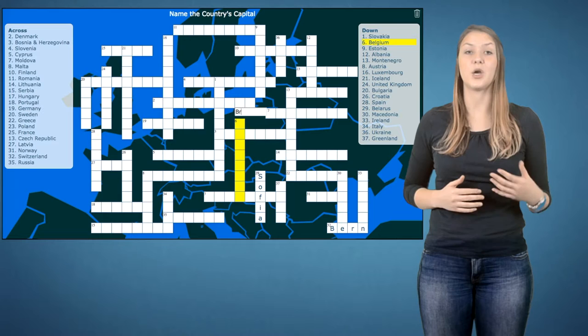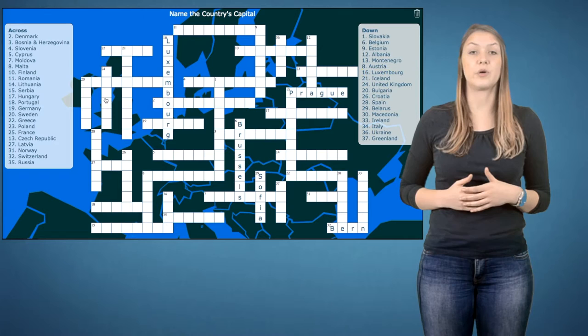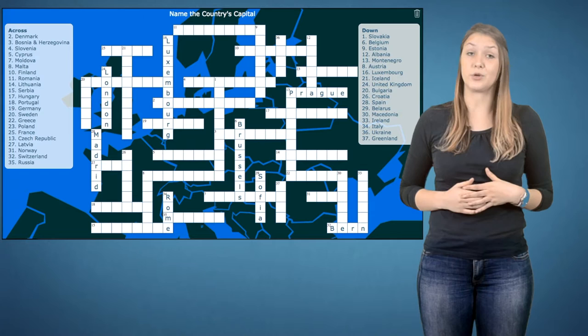Geography also has a lot of names to remember. Countries, cities, continents, mountain regions, rivers, and so on. For example, if your students need to learn about capital cities, make them guess it in a crossword.